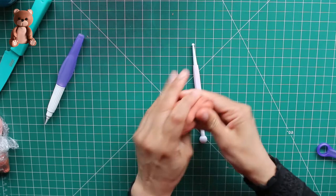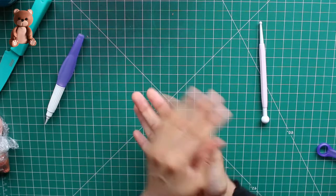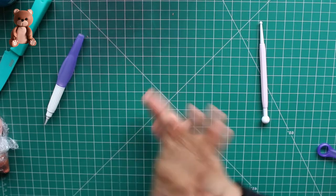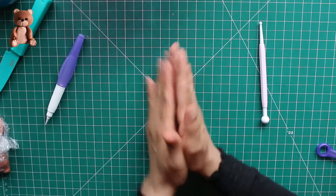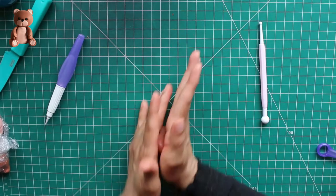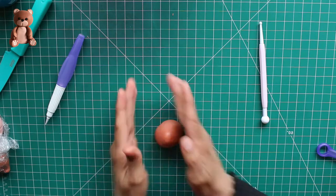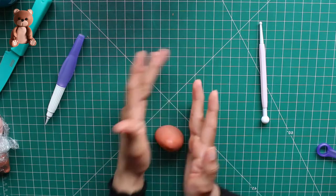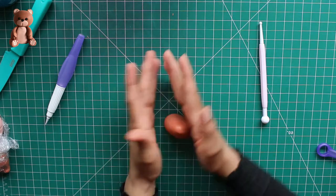So we'll start working on the body now. Roll it into a ball first and then as you can see with my hands, I'm shaping it into a cone shape. So it's wider at the base and narrow at the top.